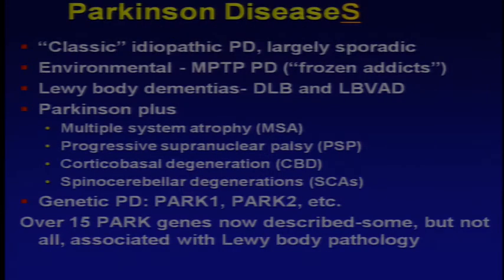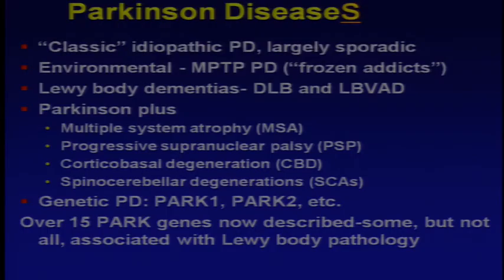Parkinson disease is actually more than one entity. First is classic idiopathic Parkinson disease, thought to be largely sporadic. Then there are environmental causes, the classic being the MPTP story or the frozen addicts. There are the Lewy body dementias, including dementia with Lewy bodies and the Lewy body variant of Alzheimer's disease. And then there's the category lumped as Parkinson plus, including multiple system atrophy and progressive supranuclear palsy. Some PARK genes are associated with Lewy body pathology, but not all.